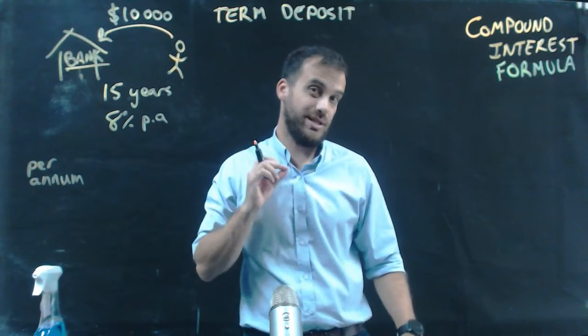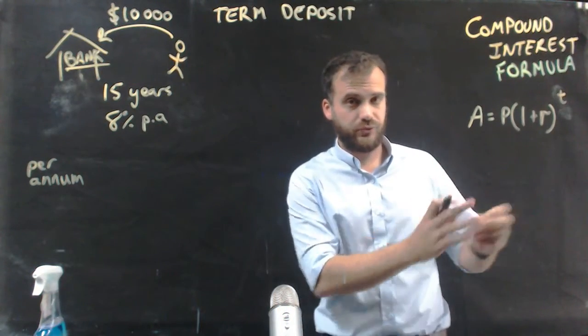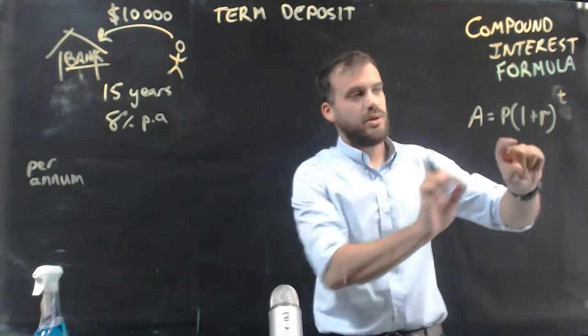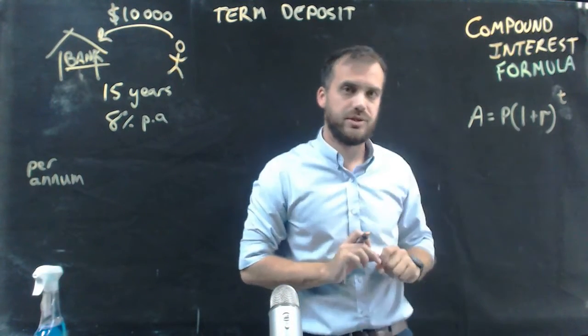And our compound interest formula is, here's our compound interest formula. A equals P times 1 plus R, all to the power of T.